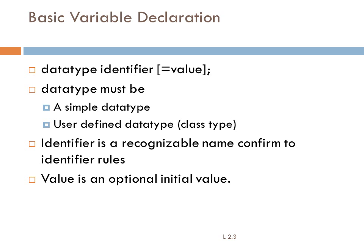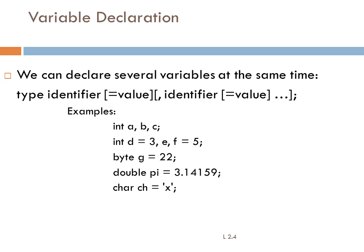The data type must be a simple data type or a user-defined class data type. The identifier is a recognizable name following identifier rules — it should contain alphabet characters, digits, and underscores, and should not contain any other characters. The value is optional. If you want to declare more than one variable, separate them by commas. You can create only one type of variable per line; you cannot mix multiple data types on the same line.